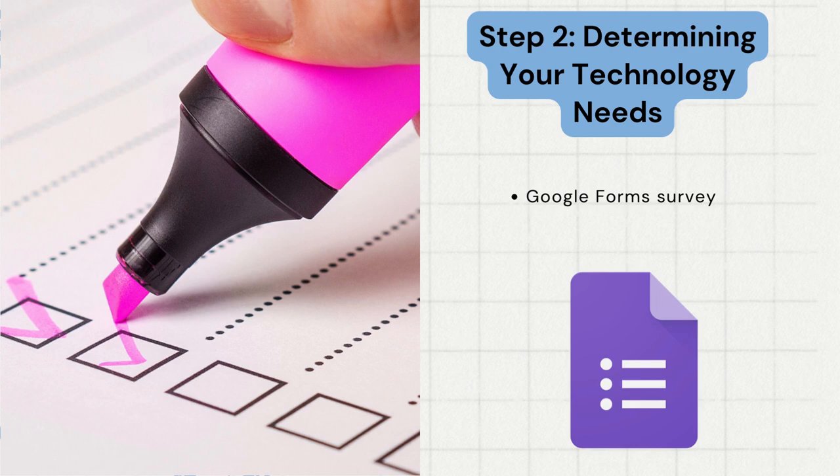The second step is called determining your technology needs. In this step I would have all teachers complete a survey to see if they know what gamification is, if they know how to implement it, and if they have ever used gamification in their classroom. The resource I would use for my survey is Google Forms.